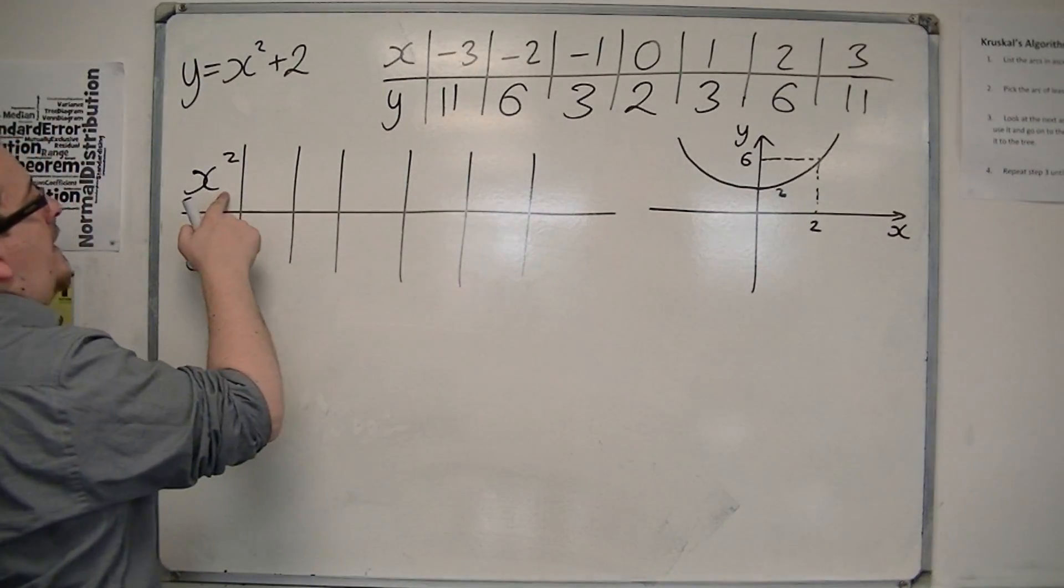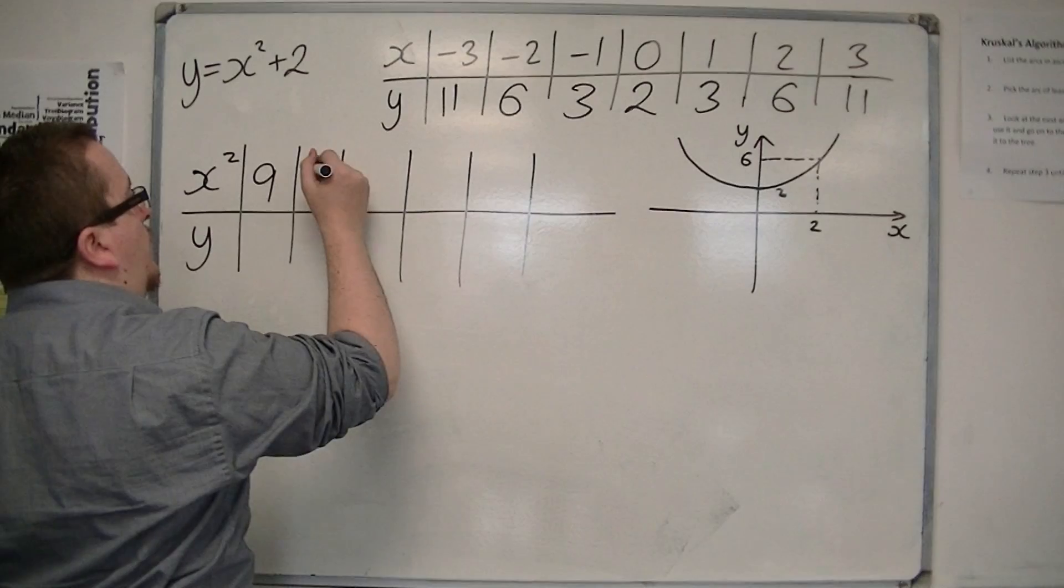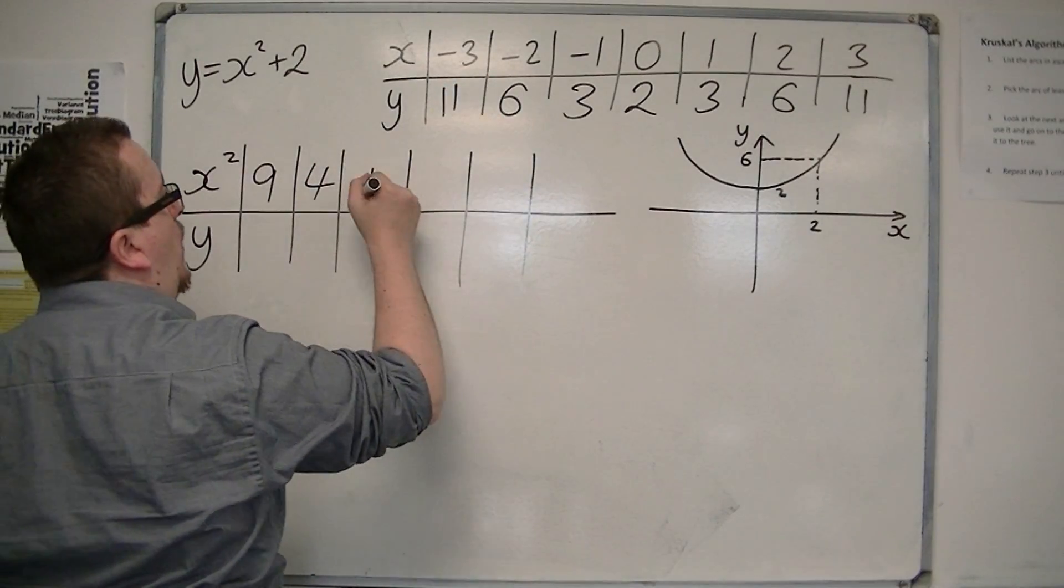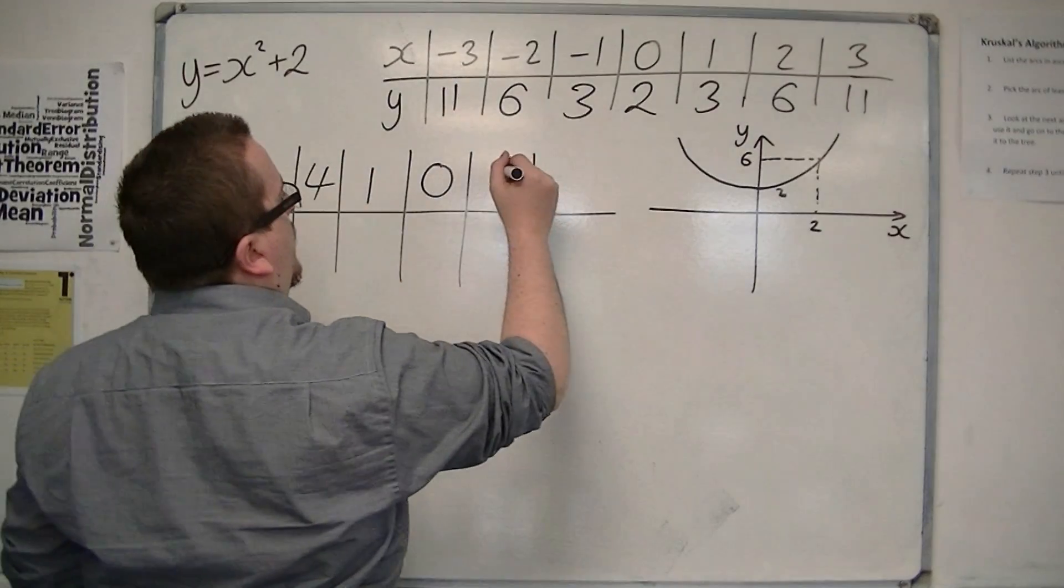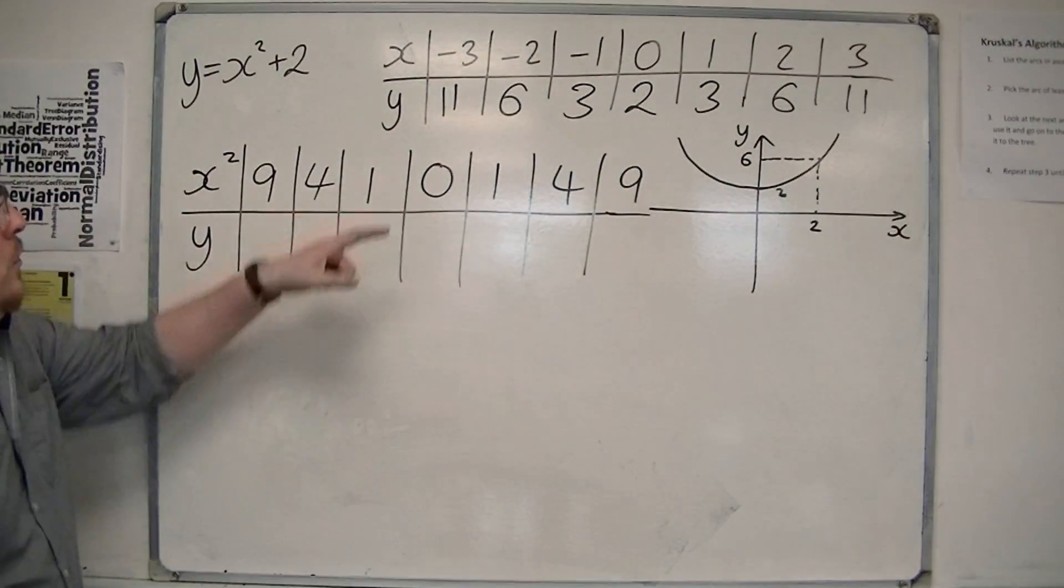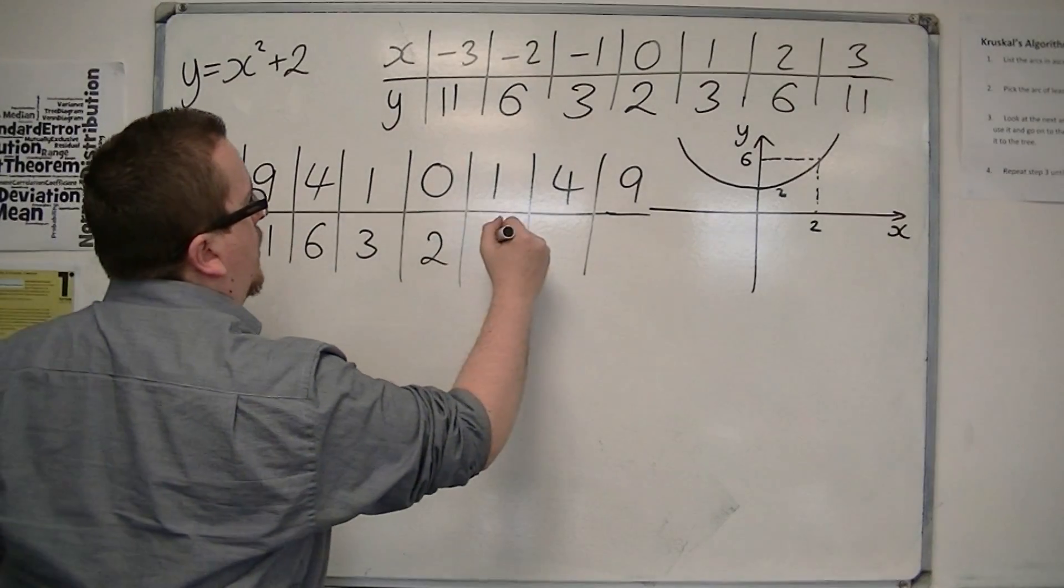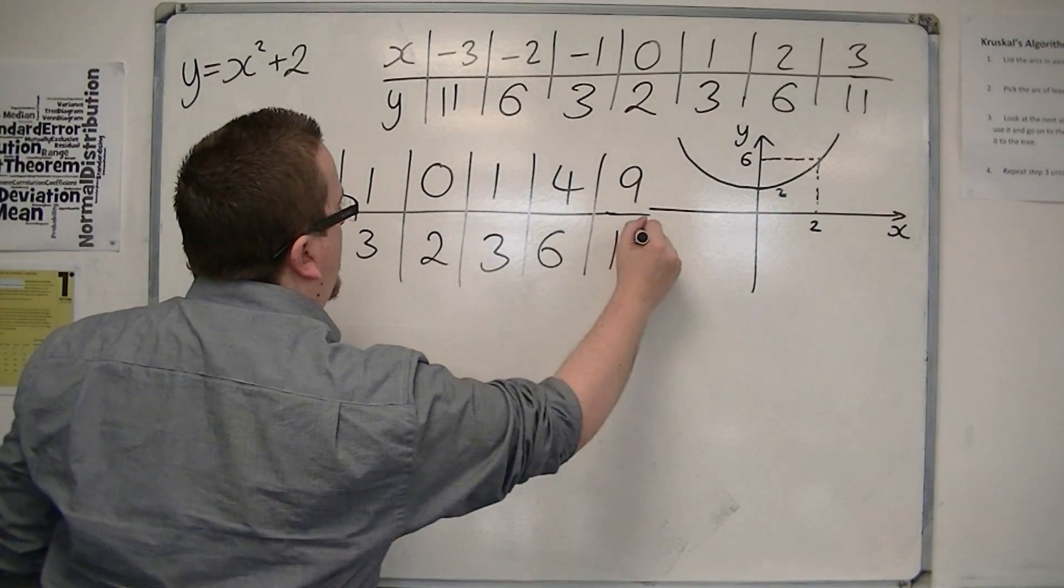So x squared would be 9, x squared here would be 4, then 1, then 0, so 1, 4, and 9. And the y coordinates would be the same. So 11, 6, 3, 2, 3, 6, 11.